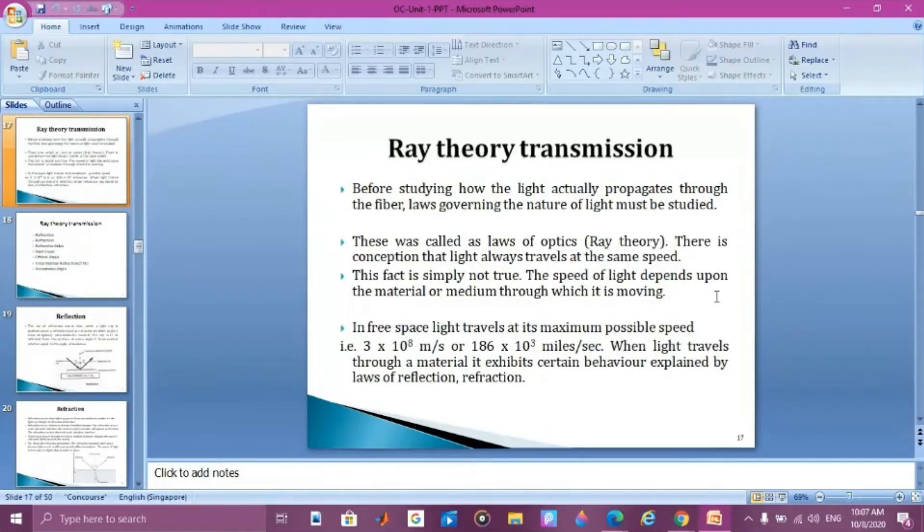Normally, in free space, the light travels at its maximum possible speed of 3×10⁸ meters per second or 186×10³ miles per second. When light travels through materials like air or glass, it exhibits certain behavior explained by laws of reflection, refraction, and diffraction.